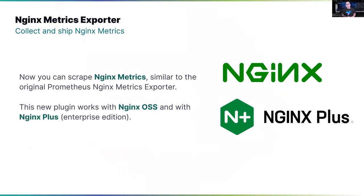One of the new input plugins for metrics collection is the NGINX plugin. NGINX is interesting because as a web server it can expose metrics in JSON format. This new NGINX metrics exporter plugin connects to the NGINX service, retrieves the JSON payload, converts it to a metrics payload, and then processes it in the FluentBit pipeline and sends it to any metrics endpoint. We support not just NGINX OSS but also NGINX Plus, the enterprise edition.